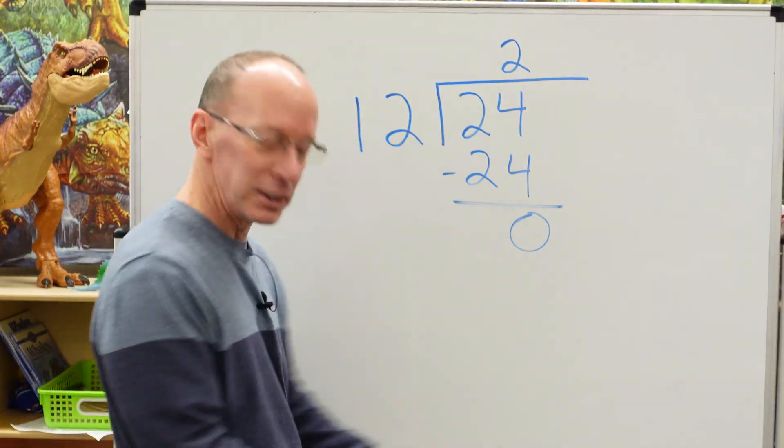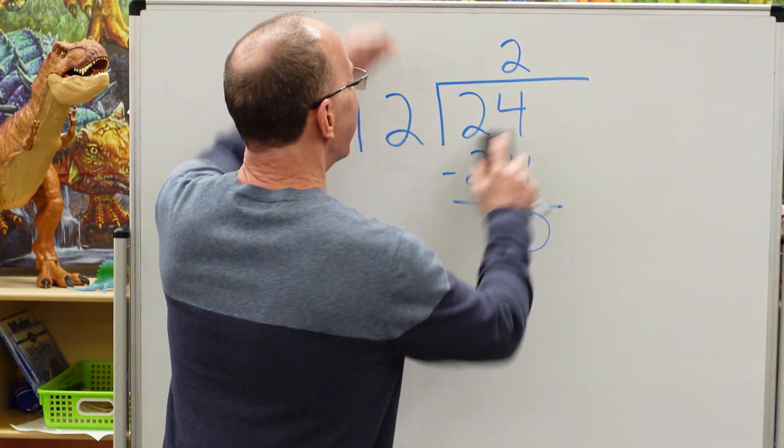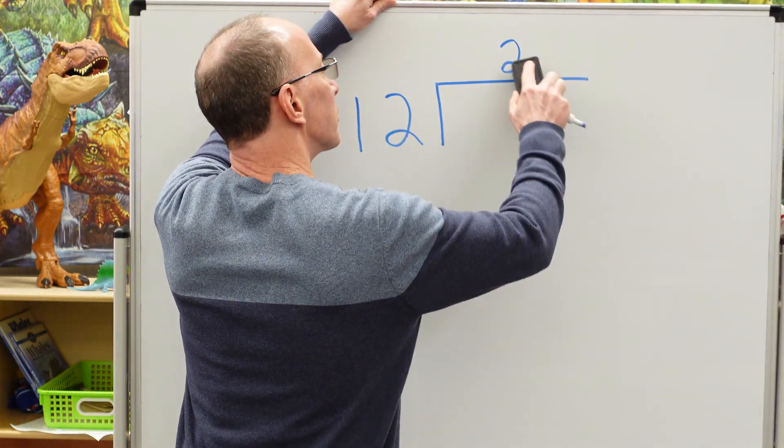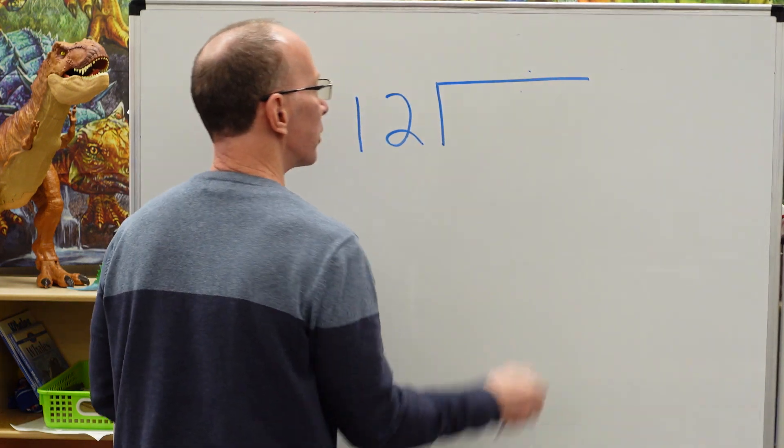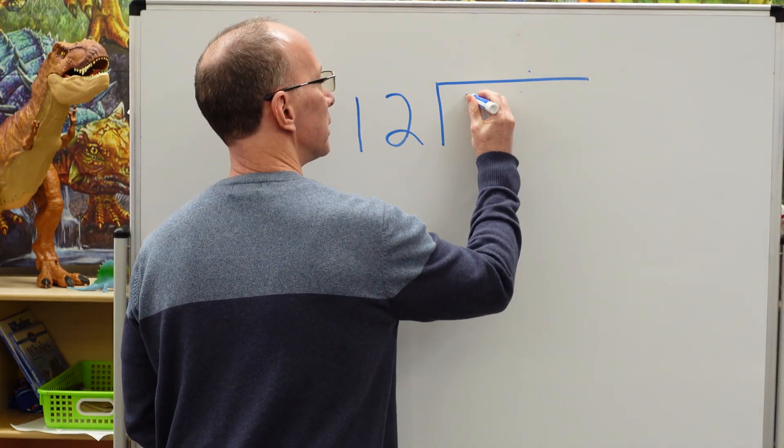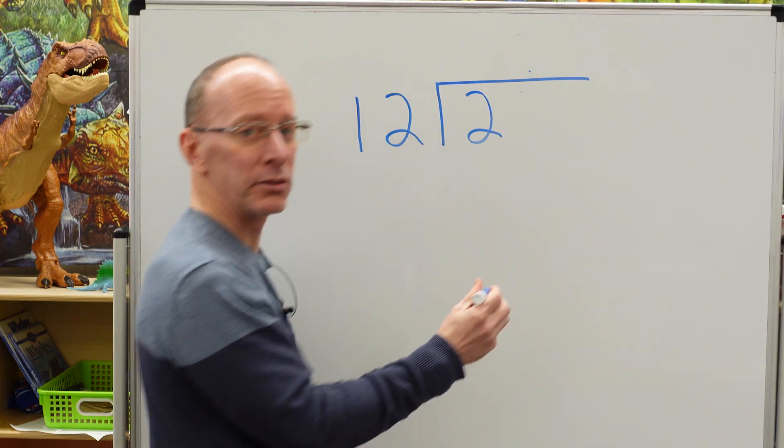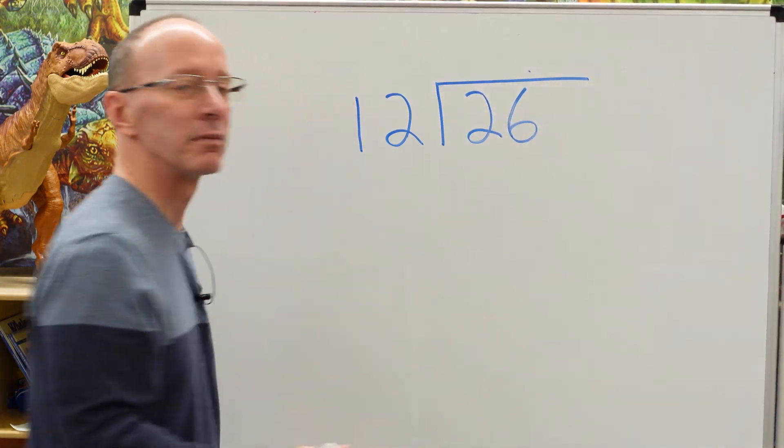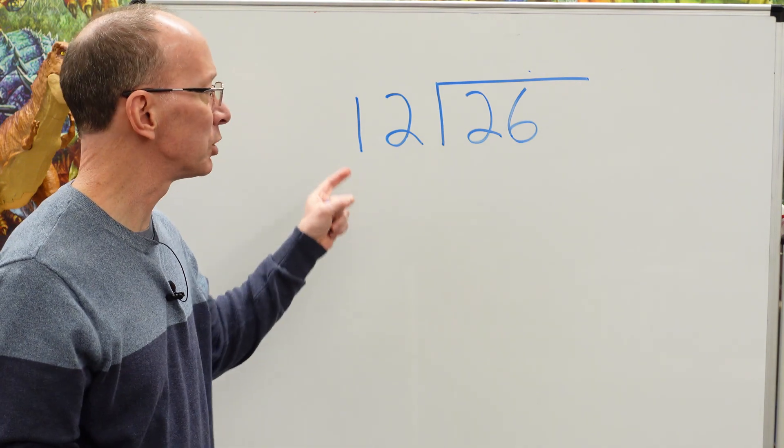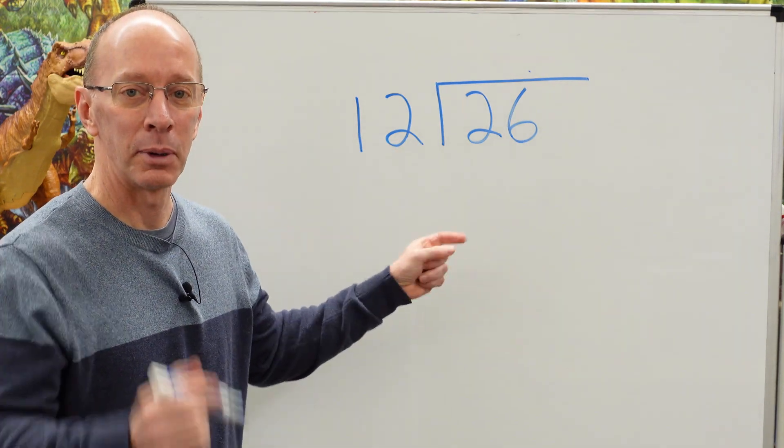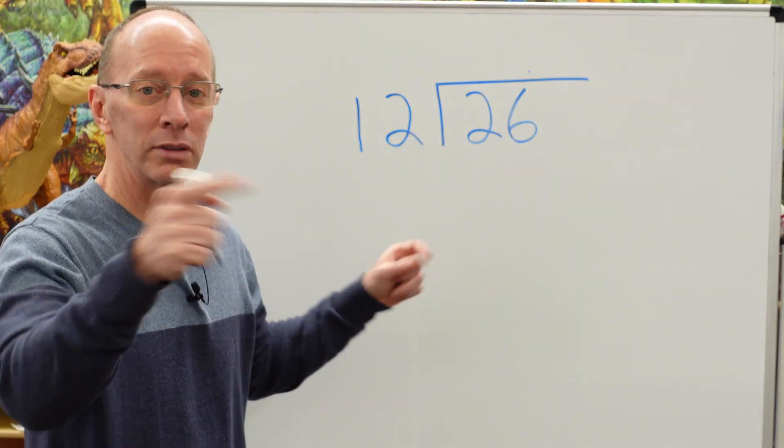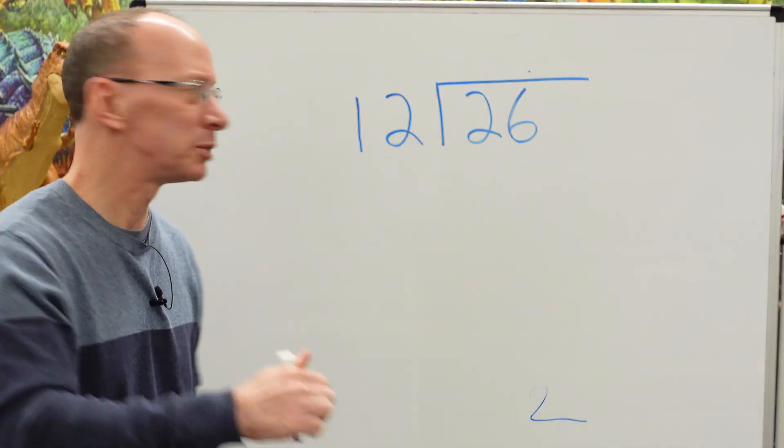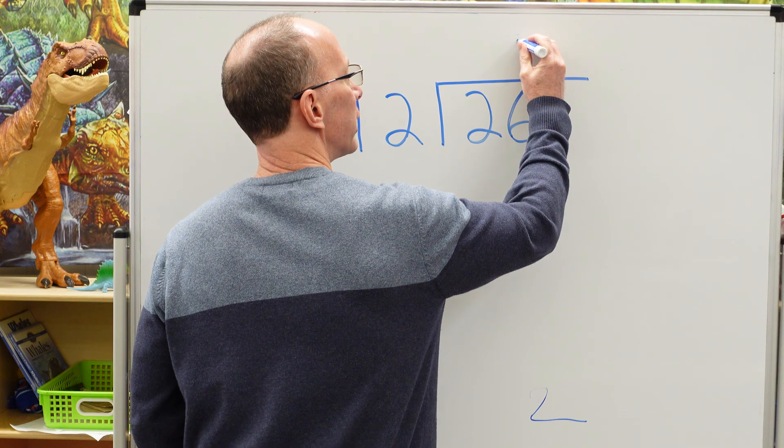Now we're going to put in a different number. I'm going to put 26. How many times can I put 12 into 26? Remember, 12 times 2 is 24, 12 times 3 is 36. Too high. Bring it down. We're going to do 12 times 2, so I'm putting the 2 right here.